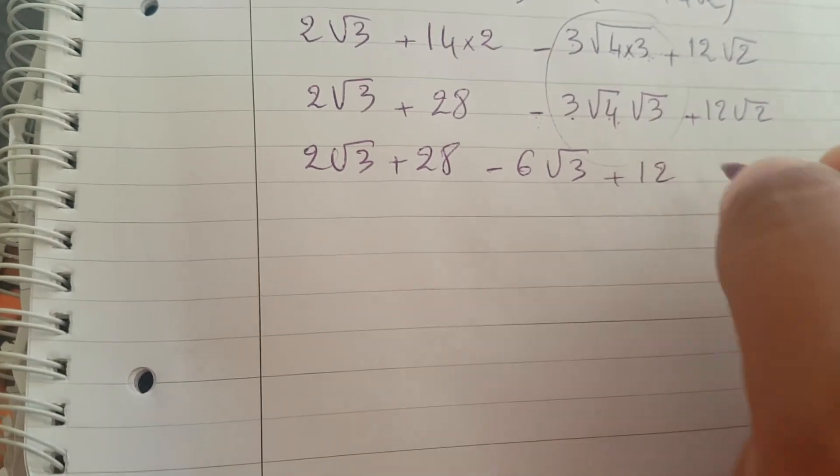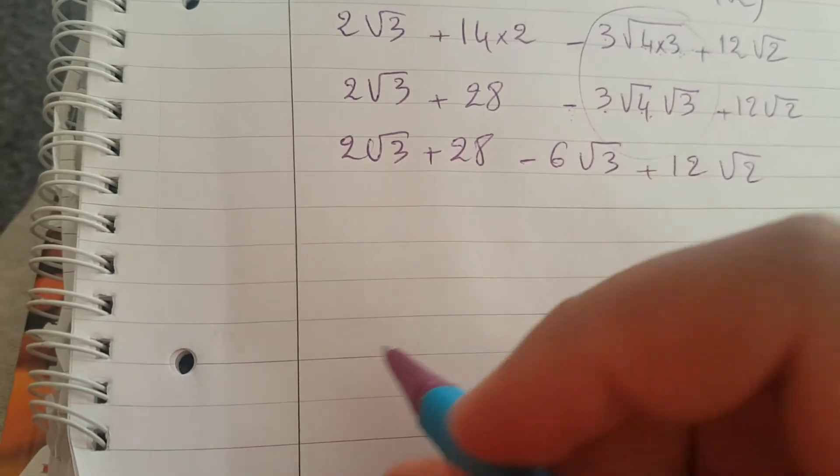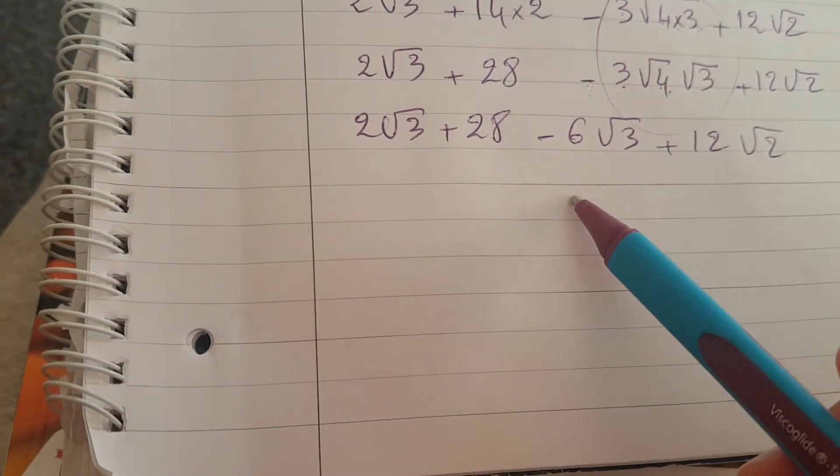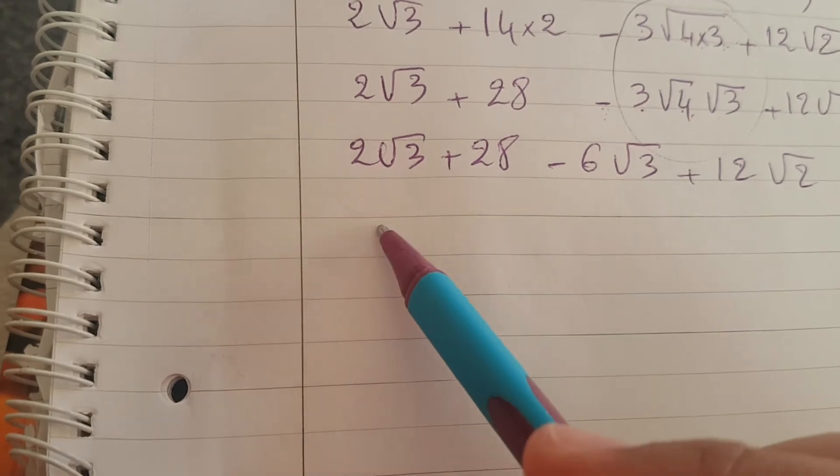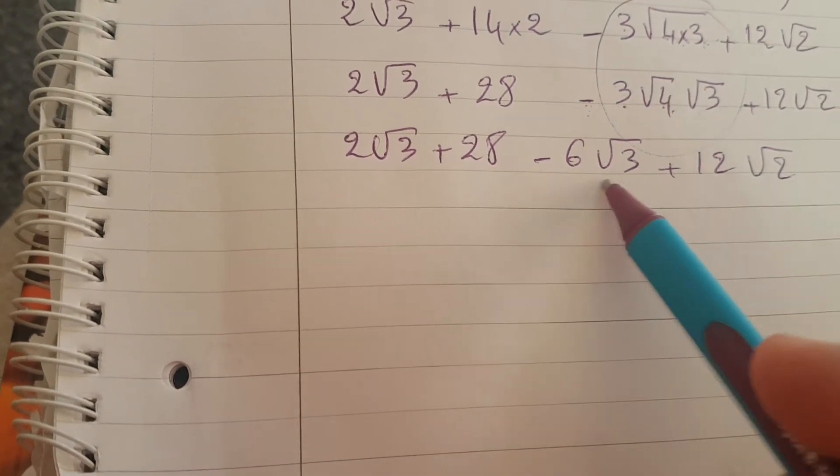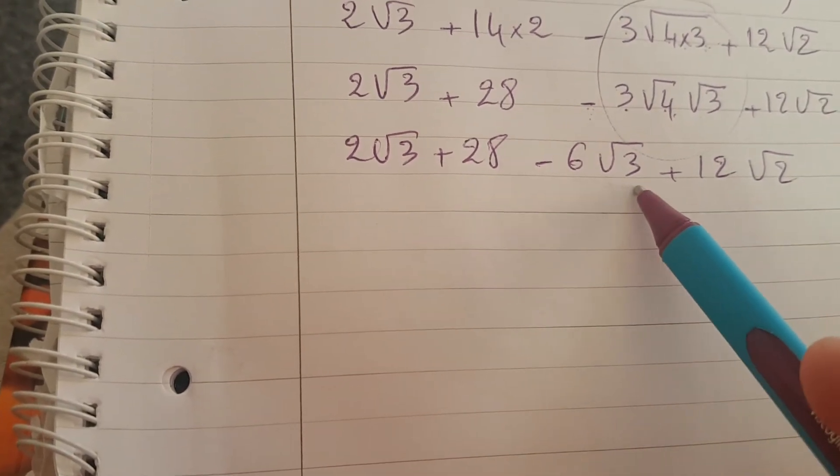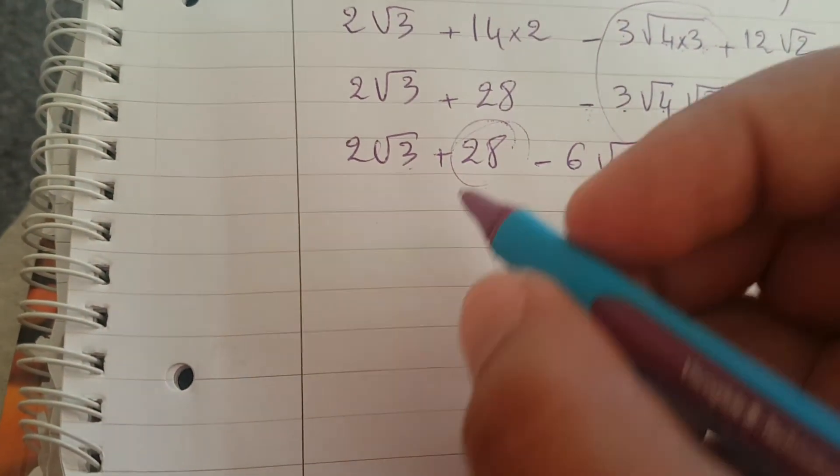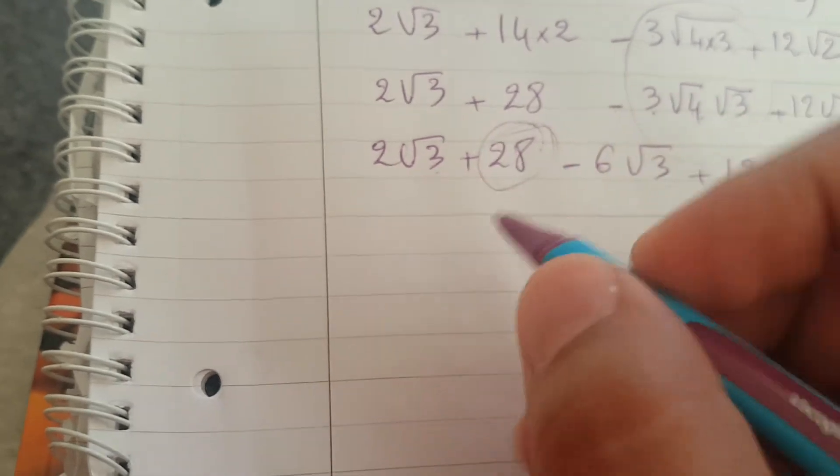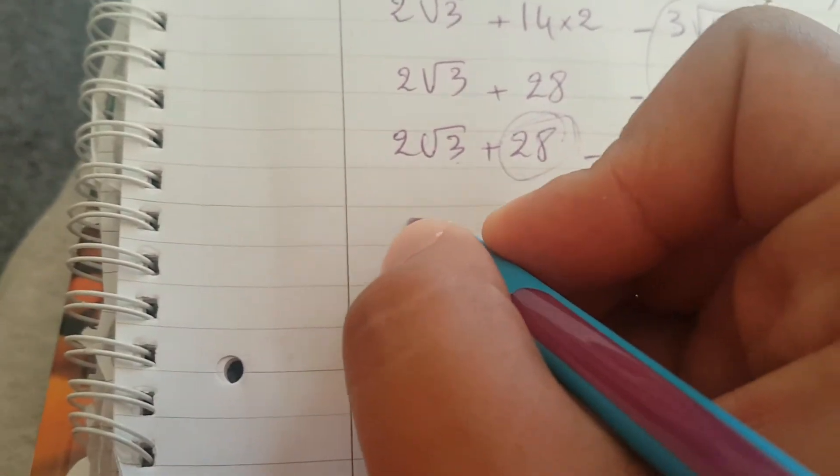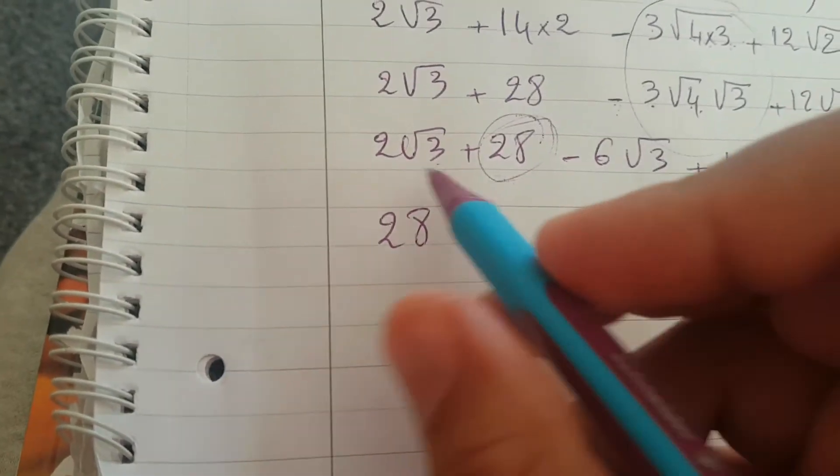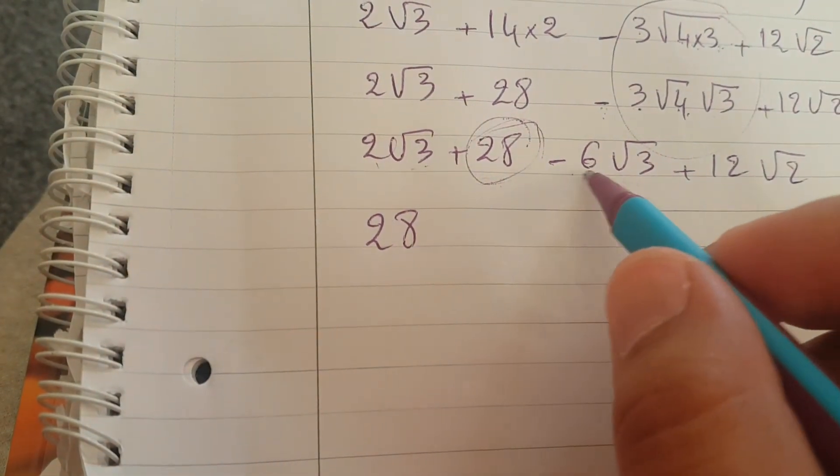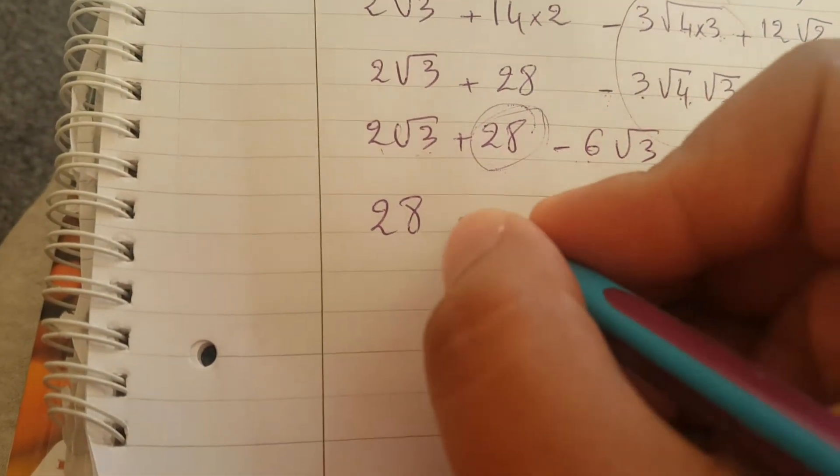Can we do anything with this? Here we have 2 square root of 3, here we have negative 6 square root of 3. We add like terms. It'll be better if we start with this number, for example 28. So 2 square root of 3 minus 6 square root of 3 is negative 4 square root of 3.